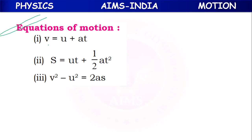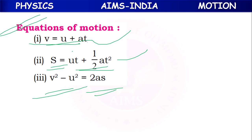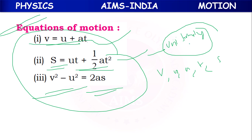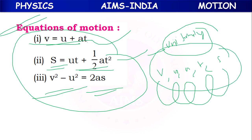Equations of motion: v = u + at (first), s = ut + ½at² (second), v² - u² = 2as (third). These equations apply to uniformly accelerated bodies and give the relation between final velocity v, initial velocity u, acceleration a, time t, and displacement s.